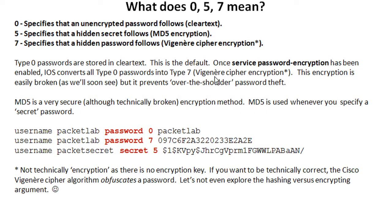To get off on a slight tangent: technically, Vigenère is an algorithm that is not encryption because it doesn't have an encryption key. If you want to be technically correct, the Vigenère cipher obfuscates a password. If you've got some hardcore security guys bugging you about this saying it's not really encryption, that's fine — it's referred to as encryption in the Cisco documentation. Speaking of extreme levels of anal retentiveness, you can also make the argument that a hash is not really encryption.